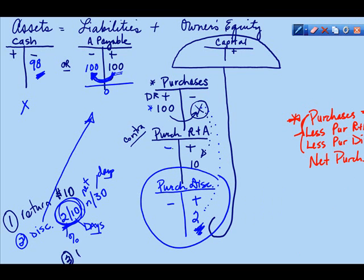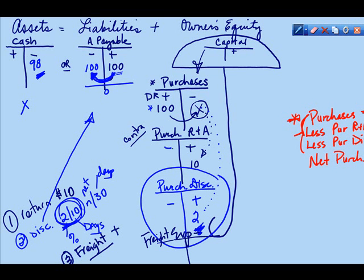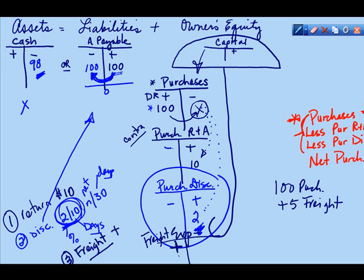We have one more thing to talk about, and that's freight, because freight is going to be an additional expense. It's going to be included on the expense side of things, so we'll have one more expense account called Freight. Freight is handled like any other expense with a debit balance — this is where it increases. For example, if I purchased something for $100 plus I had to pay $5 freight to get it here, I'm going to have $5 in freight and $100 in purchases.